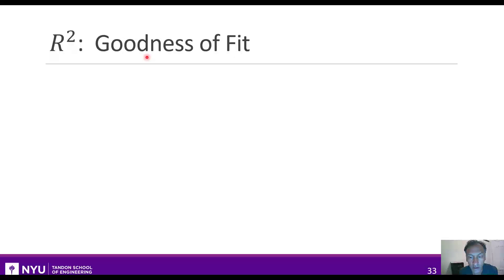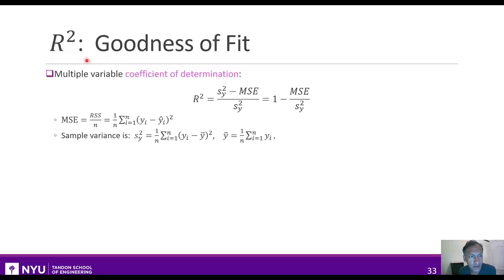Okay, one thing that I want to talk about is how we measure how well this multiple variable linear model fits data. And one of the most useful metrics for that is called the r squared value. It's something that's called the coefficient of determination, and it's given by this formula here, where s y squared is just simply the sample variance, and the MSE is what we've been talking about all this entire section, which is the RSS per sample.